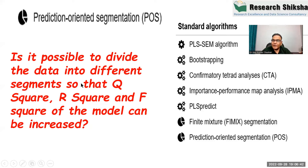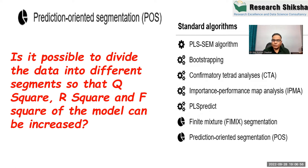We are dividing the data into different groups in such a way that the Q square, R square, and F square of the model can be increased. Because we are going to find out unobserved heterogeneity on the basis of R square, Q square, and F square. Therefore, this method is known as prediction-oriented segmentation.